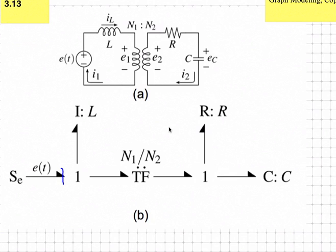That doesn't propagate any further, so we'll go to the energy storing elements. There are two of them: the I element representing the inductor and the C element representing the capacitor. If I put the I element in integral causality, it will specify the flow into the one junction, which will propagate all the way out to the other side and specify the flow into the one junction to the right of the transformer.